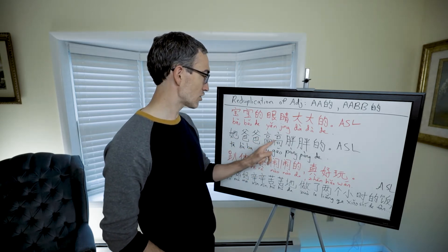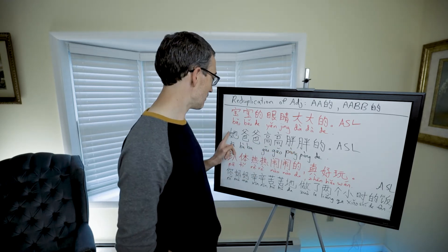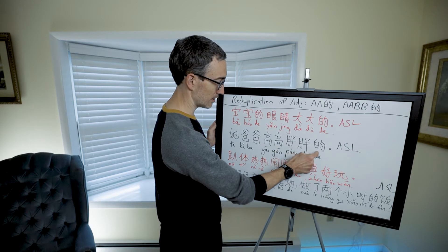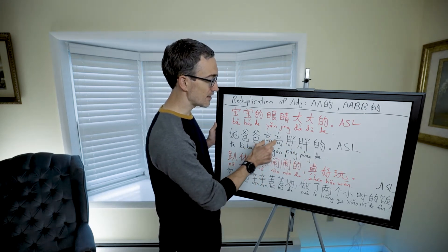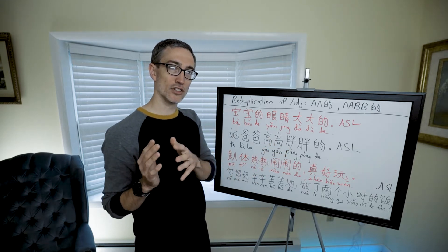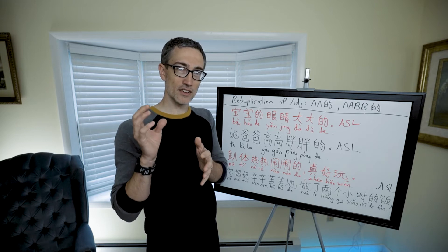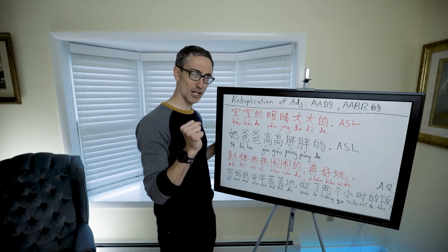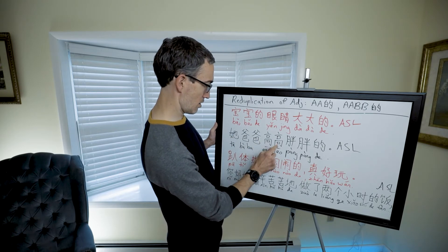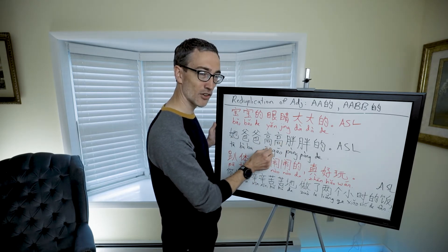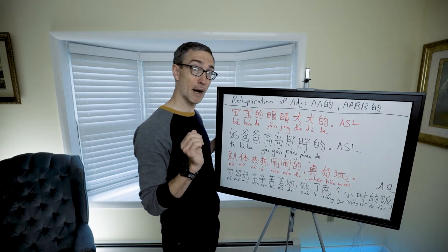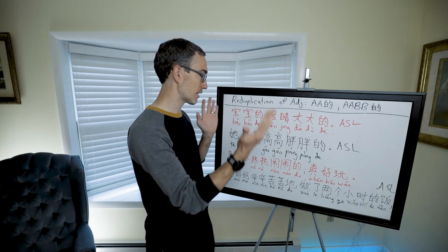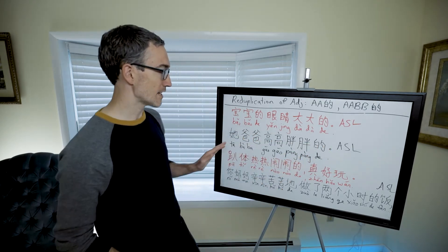Here's an interesting one: 'tā bàba gāogāo pàngpàng de' — her dad is tall and stocky. It looks like AABB, but what's different is these are two separate adjectives, not one two-syllable adjective called 'gāopàng.' He is tall and he is stocky. There's no need to put another 'de' after 'gāogāo' — they just combined it into one unit: 'gāogāo pàngpàng de.'